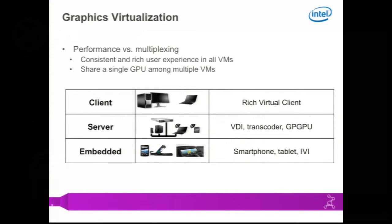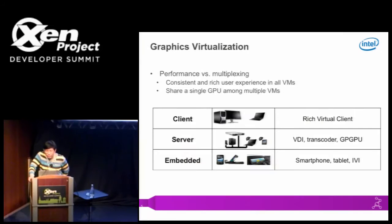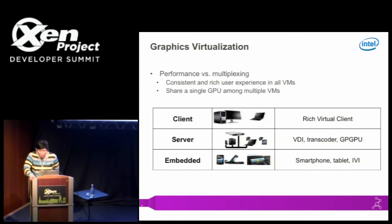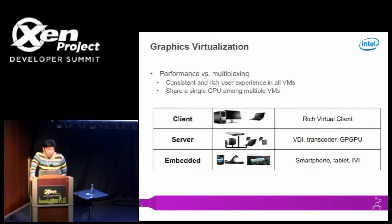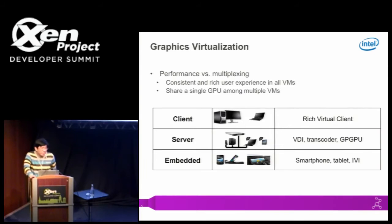What can we use virtual machines for? On the client side, you can launch multiple virtual machines with a rich user experience comparable to native. On the server side, we can enable sharing of the GPU for transcoding, GPGPU computing, and VDI. On the embedded side, XenGT can provide the capability to share the GPU among virtual machines.